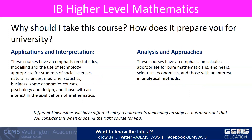Choosing the right course will depend on your future university and career choices. Applications and Interpretations is better suited for students of social sciences, natural sciences, medicine, statistics, business, some economics courses, psychology and design, and those with an interest in the applications of mathematics.